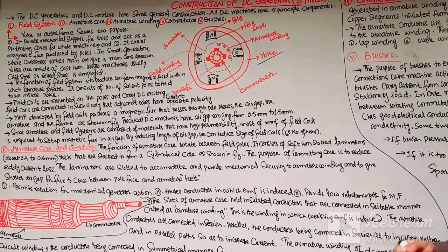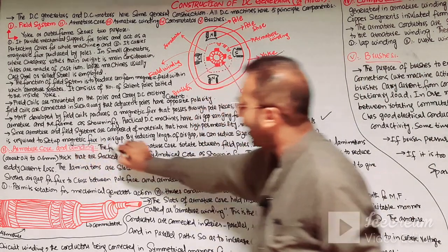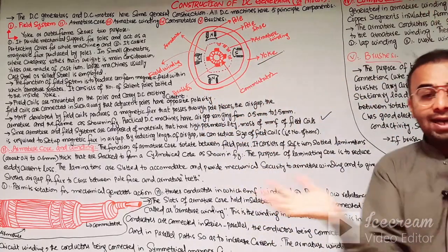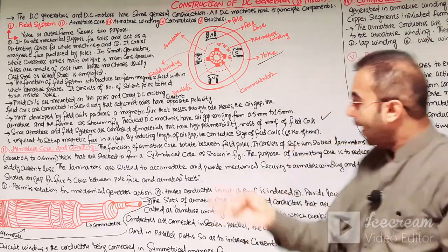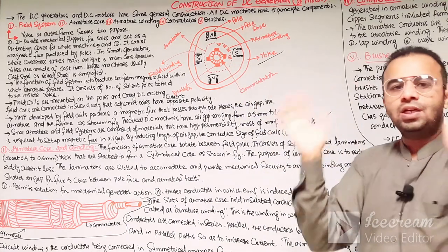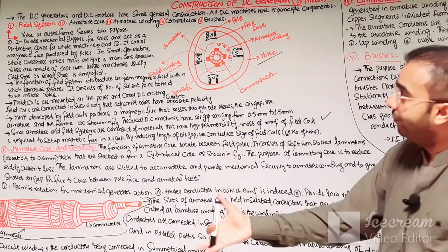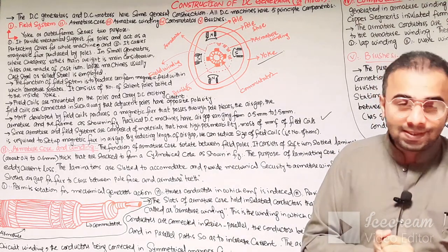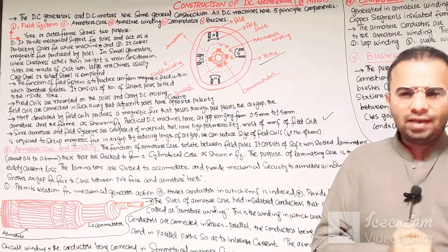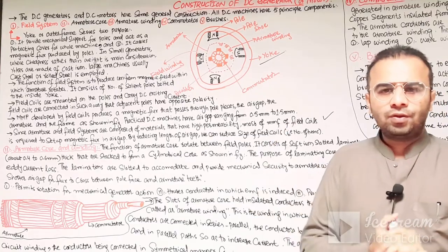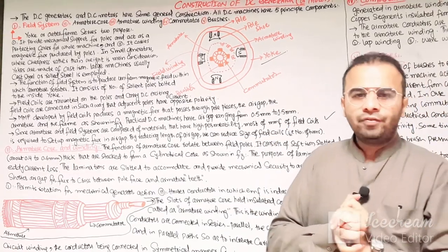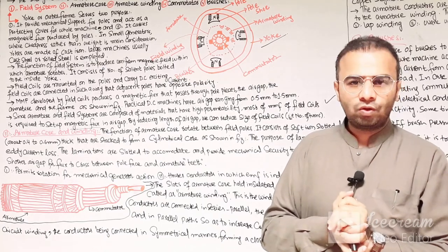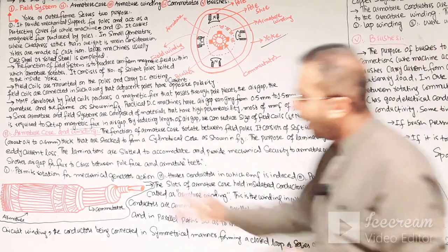Most of the MMF of the field coils is required to set up magnetic flux in the air gap. By reducing the air gap, there will be tighter magnetic coupling between the stator and rotor, and it can also reduce the size of the field coils. The main essential function of the field system is to provide the necessary magnetic field and MMF so that as the armature rotates, EMF is induced in the armature windings of the DC machine.